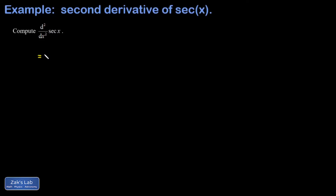In this problem, we're computing the second derivative of the secant function. The way I deal with this notationally is I'm going to take the first derivative, and then I indicate that I still have to take one more derivative — leaving a d/dx out in front. The derivative of the secant function is secant tangent, so secant x tangent x.